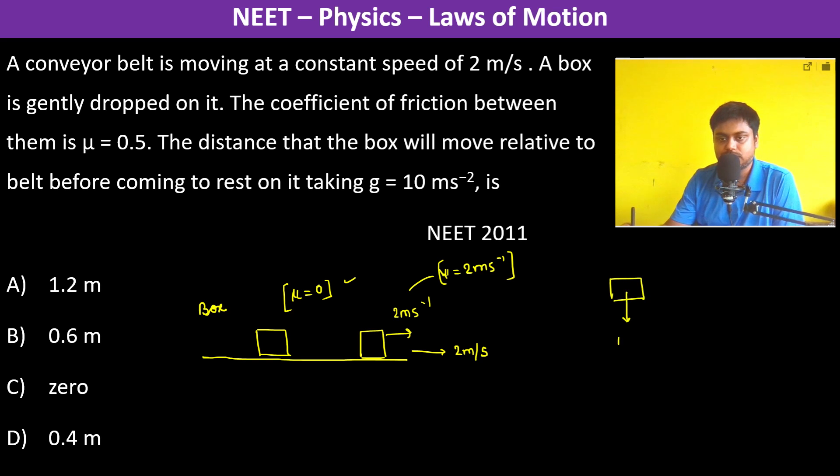The forces are mg and N. The kinetic friction fk equals μk × mg. Since the coefficient given is 0.5, we consider μk = 0.5, so fk = 0.5 × mg.